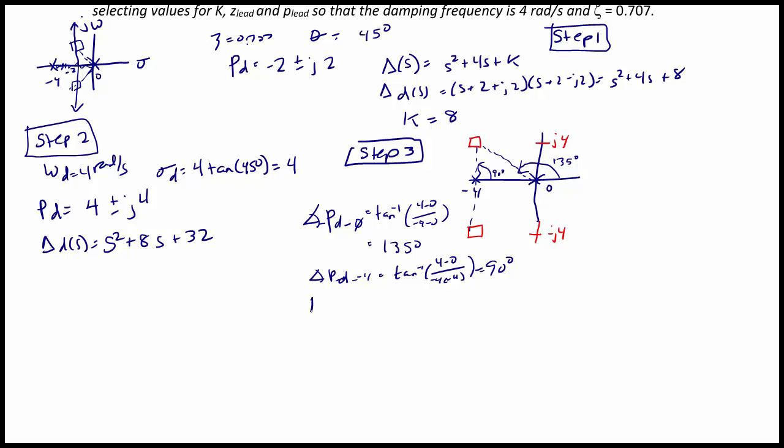So the sum of the angles from the open-loop transfer function is the sum of the angles from the zeros minus the sum of the angles from the poles. Since there are no zeros, it's 0 minus the quantity 135 plus 90 or negative 225 degrees. The angle deficiency is 180 minus 225 degrees, which means we have an angle deficiency of 45 degrees.